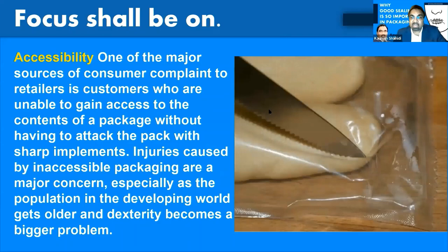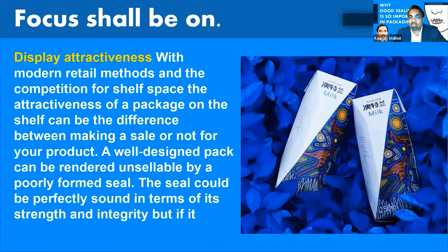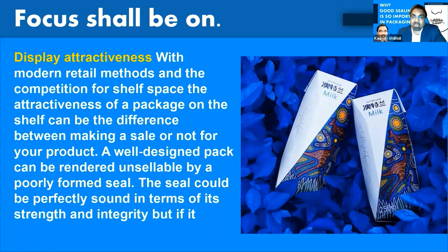Accessibility is another area where we have to ensure that through packaging sealing the consumer should not struggle and get frustrated when they have to access the product by opening the packaging. Attractive display on the shelf is most important in terms of selling the product — if the seal is improper or if the closing is not done in the right manner, whatever design we create, ultimately on the shelf the product doesn't look attractive, doesn't appeal to the consumer, and we can't sell the product.